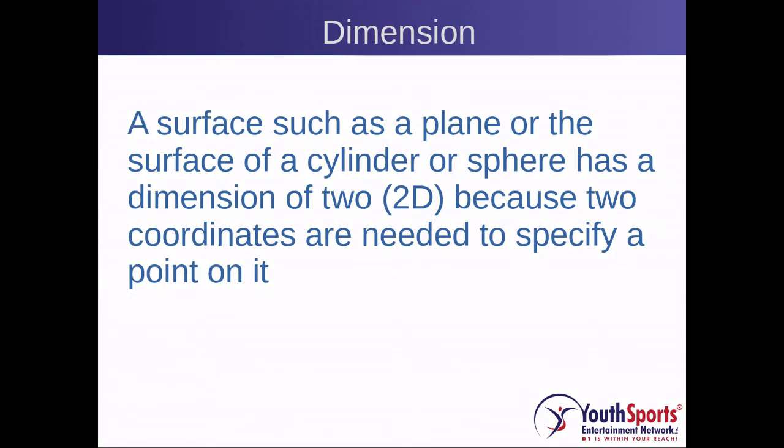If we take a cylinder, a sphere, or any surface, it is called a two-dimensional surface because we need two coordinates to specify a point on it.